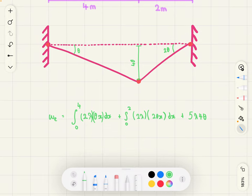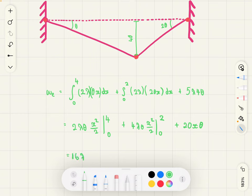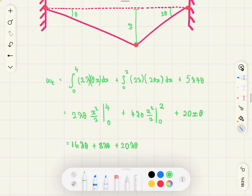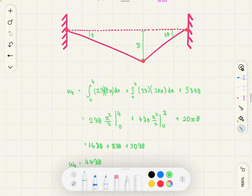Now, when we simplify this, we're going to get 2 lambda theta x squared over 2, integrate from 0 to 4, plus 4 lambda theta x squared over 2, from 0 to 2, plus 20 lambda theta for the point load. This is going to simplify and we get the external work as 44λθ.